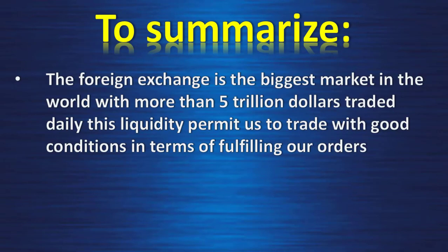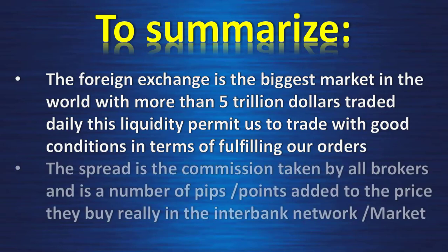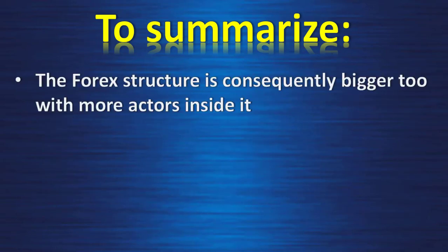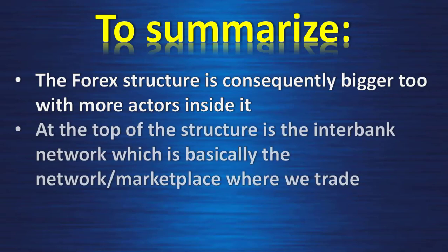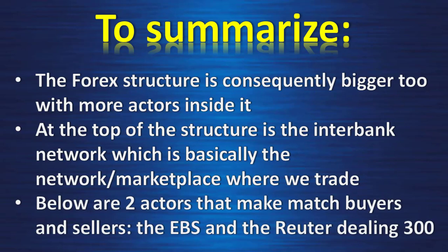To summarize: the foreign exchange is the biggest market in the world with more than five trillion dollars traded daily. This liquidity permits us to trade with good conditions in terms of fulfilling our orders. The spread is the commission taken by all brokers — it's a number of pips added to the price they buy in the interbank network market. At the top of the structure is the interbank network, and below are two actors that match buyers and sellers: the EBS and the Reuters Dealing 3000.